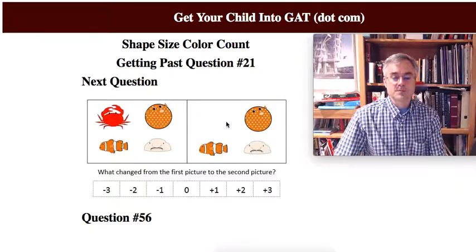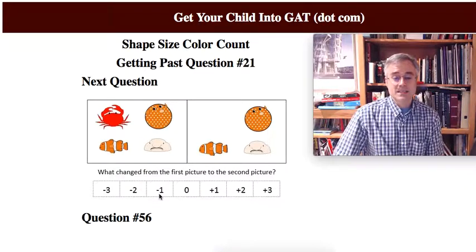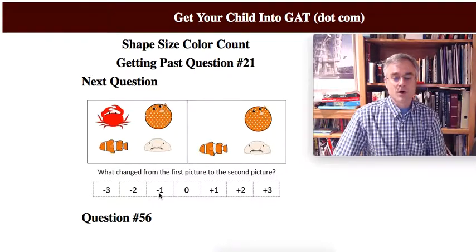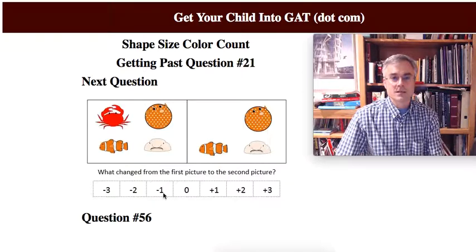Well, what changed is the crab's missing. Okay, so is it minus three, minus two, minus one, zero, plus one, plus two, or plus three? And the answer is of course minus one. Again, once the kid gets it, using the term minus one or pointing to minus one or circling it is no problem.